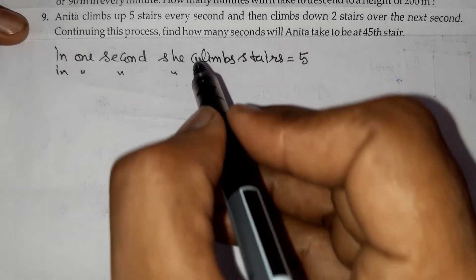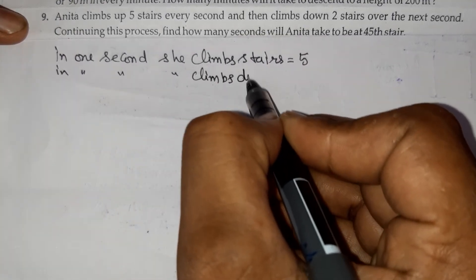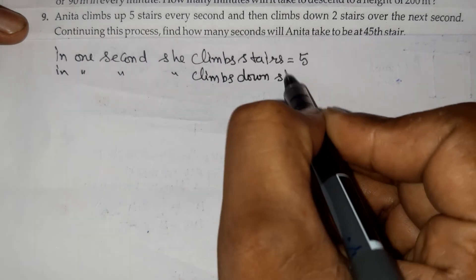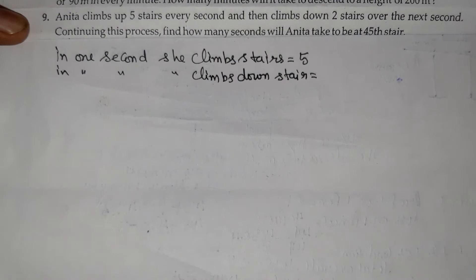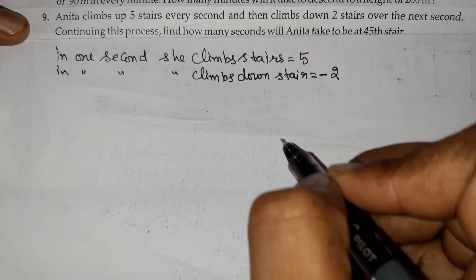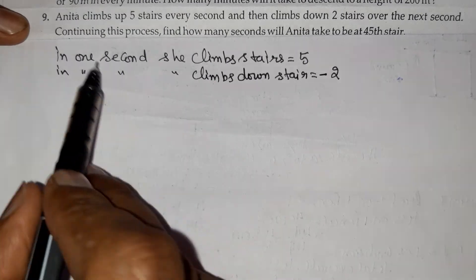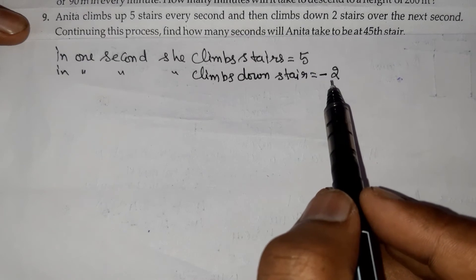Then she climbs down 2 stairs. For climbing down, we'll use negative integers, so that's -2. This means total stairs she climbs is 5-2=3 in 2 seconds.